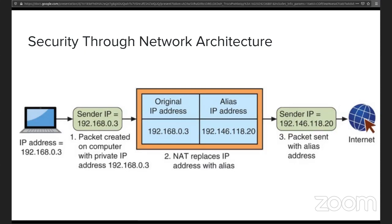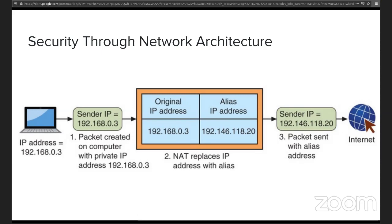Network address translation, which only works for IPv4 networks, is another way of implementing security. Similar to a proxy, we take the IP address of an internal device and mask it to look like another IP — the router's IP, for example — so the world doesn't necessarily know which actual device created the communication. This is also available for ports: that's port address translation. IPv6 has no need for it because there are way too many available addresses. Although you could do NAT and PAT for IPv6, it's not necessarily needed.